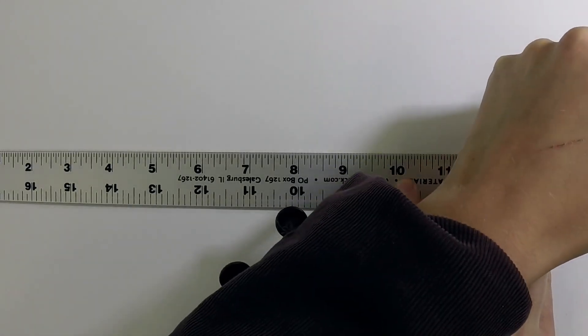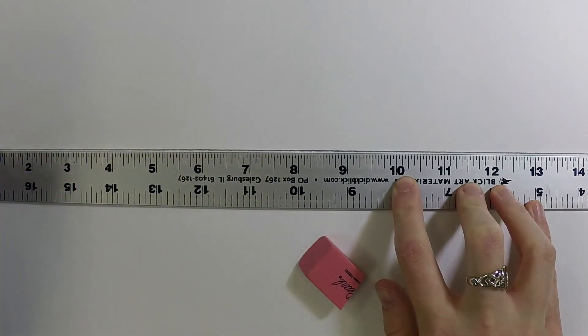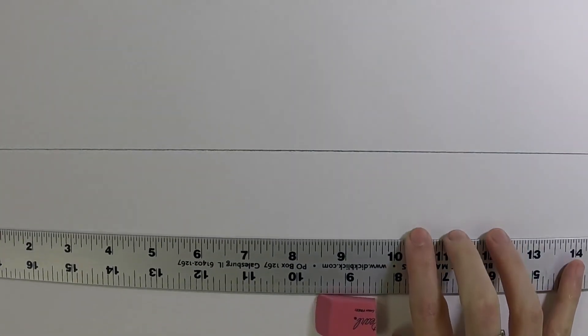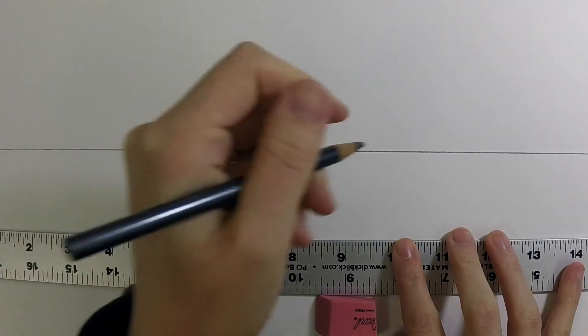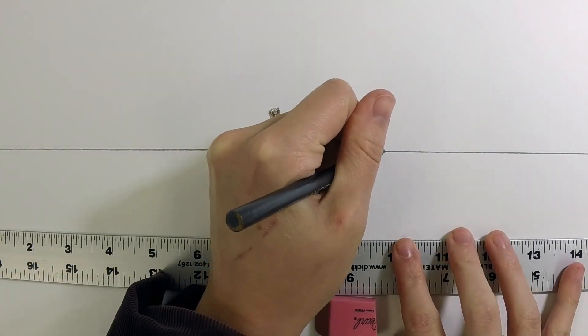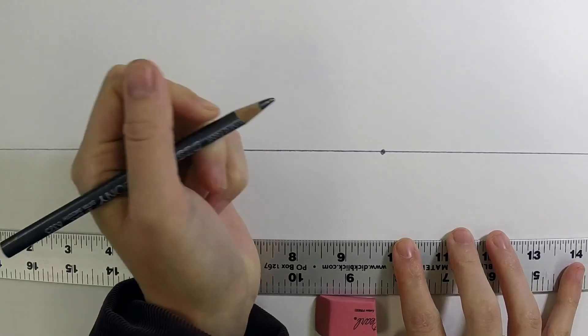What we're going to do first is start with our basics. We'll start with a horizon line, this can be anywhere on the page, and a vanishing point. This vanishing point has to be on the horizon line.